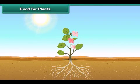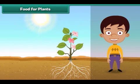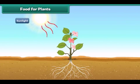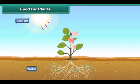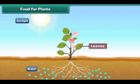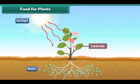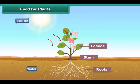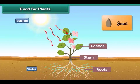Let us now understand where plants get their food. Plants make their own food with the help of sunlight. Plants take water from the soil and prepare food in their leaves. The plant takes up some part of the food and the rest is stored in its roots, stem, leaves and seeds.